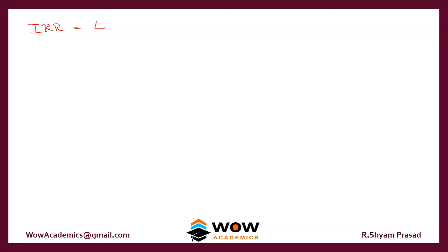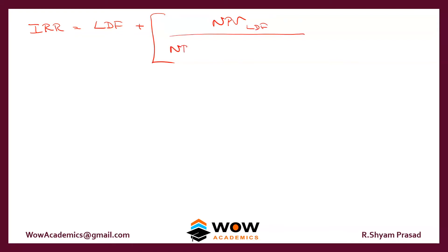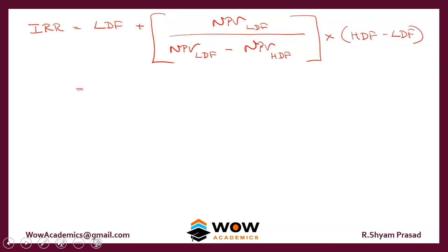The IRR formula works like this: IRR equals the lower discount factor plus, open bracket, NPV at the lower discount factor as the numerator, divided by NPV at the lower discount factor minus NPV at the higher discount factor, close bracket, multiplied by the higher discount factor minus the lower discount factor. We have taken two discount factors: 13% as the lower and 17% as the higher.